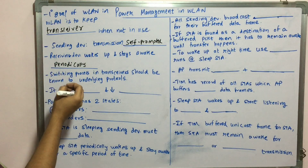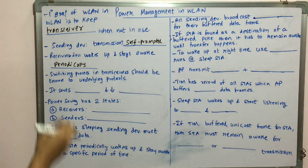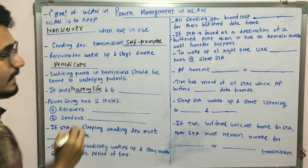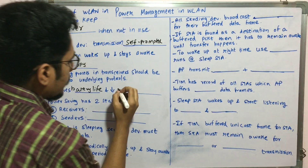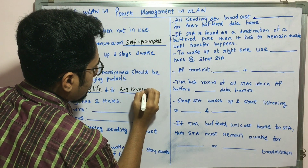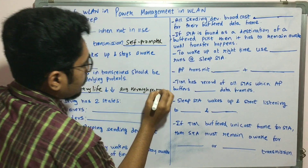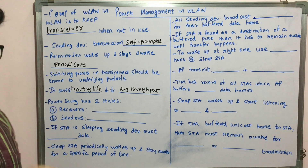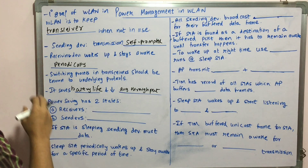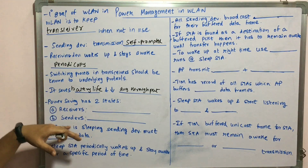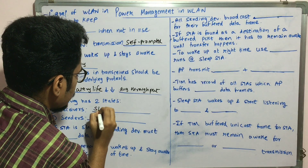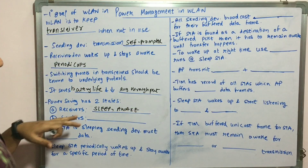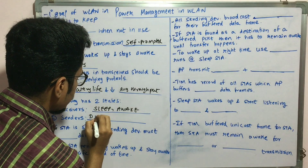If you employ this process properly, it can save battery life — the battery life would be increased, but at the cost of reducing the average throughput. The average throughput of the device reduces while battery backup increases. Every device has two states in power saving: receivers have sleep and awake states, whereas senders have data buffering.